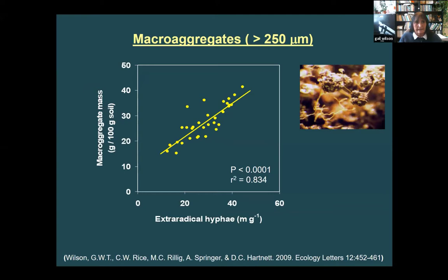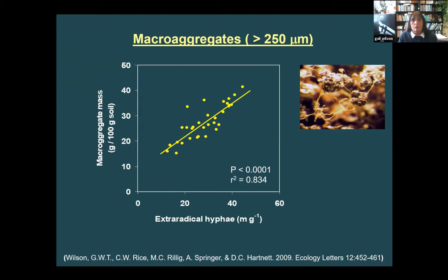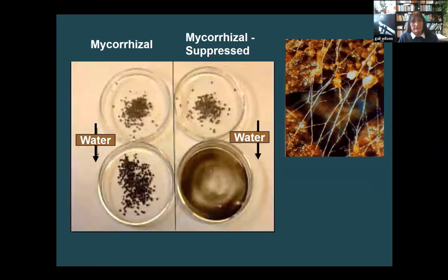Some research we did at Kansas State University found that if you increase or allow the amount of mycorrhizal hyphae to extend in the soil, you have greater formation of macro aggregates. Deanne talked about these and the importance of macro aggregates to a healthy soil. In a teaspoon of native soil you can have miles of hyphae all packed in there, and you can imagine how all those hyphal strands help hold those aggregates together — even when wet. So they're water-stable macro aggregates.